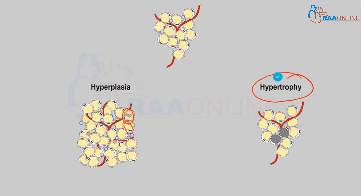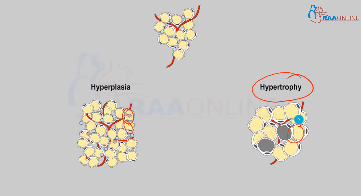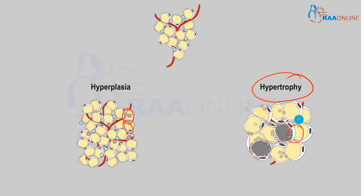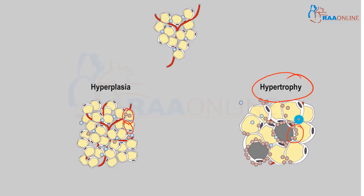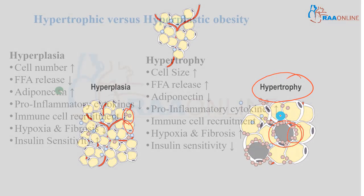But in hypertrophy, the size increases and the fat cells become pathological. This is more severe — there is an increase in size, and the fat cells are totally dysplastic.